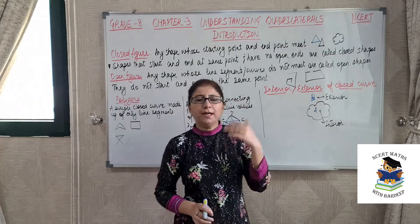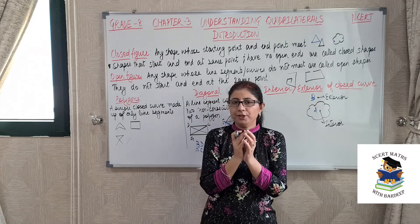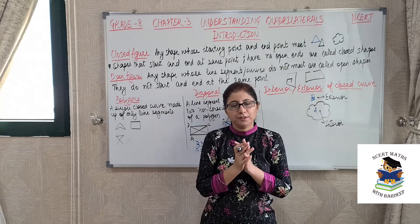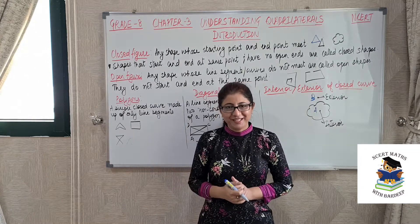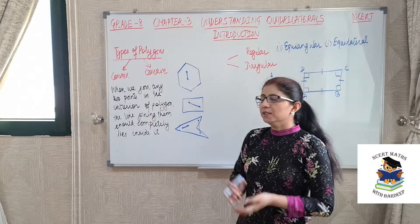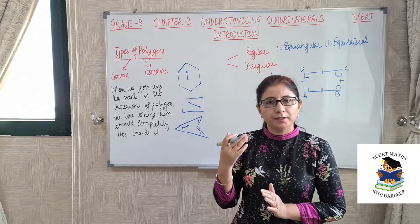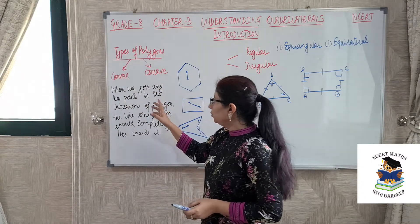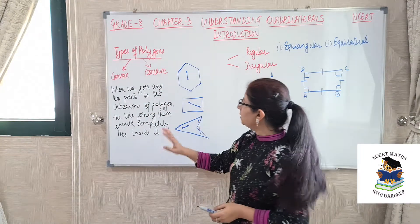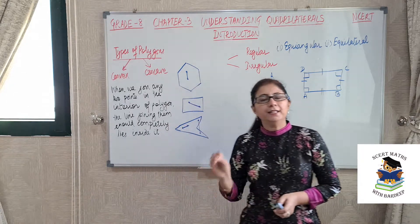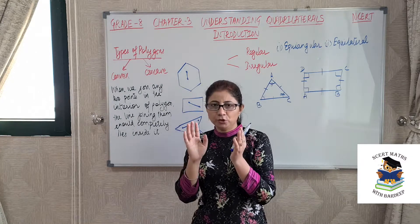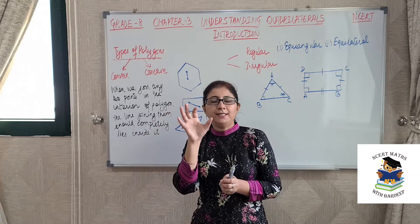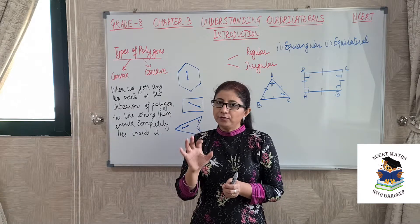So interior means the region inside your figure, and the region outside your figure is the exterior of your closed curve. Now let's move on to the next topic — the different types of polygons. Polygons can be concave polygons or convex polygons. Let's see what is a convex polygon: when we join any two points in the interior of a polygon, the line joining them should completely lie inside it. That means anywhere you take two points in the interior of a polygon and join them, the full line segment should lie in the interior.